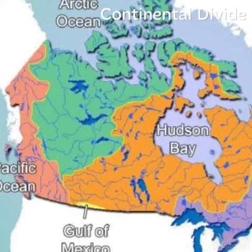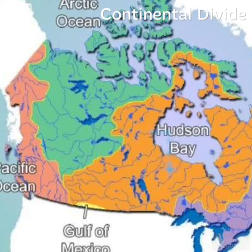Saskatchewan is east of the continental divide. Some of its waters flow north to the Arctic Ocean, and some flow east to the Hudson Bay.